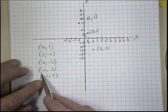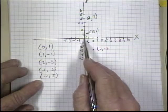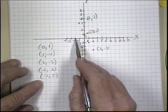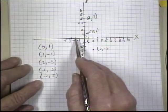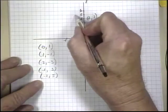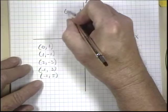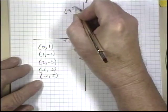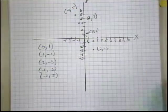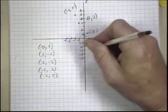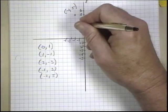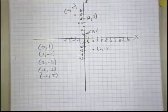And the last one is minus 2 on the x. So minus 1, minus 2, and 5 would be right here. And I'll write that over here. That's minus 2 and 5. Now I've plotted all of the ordered pairs that I generated.